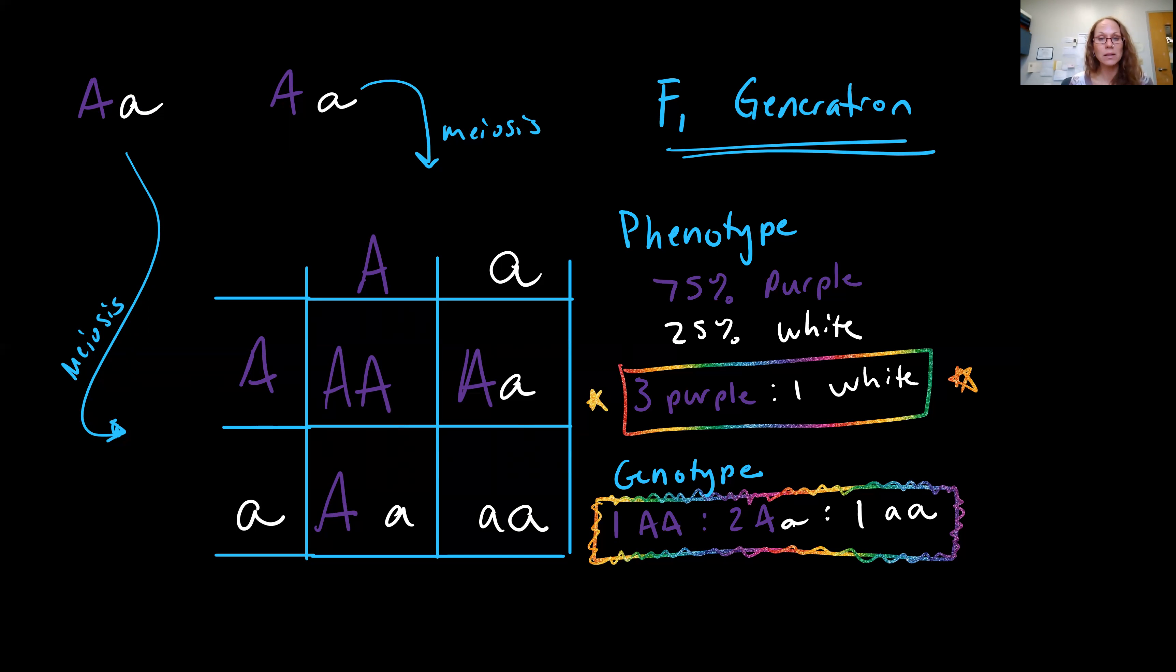So, classic Mendelian ratio, this was the thing that was special about his findings and his application of statistics, is when you're crossing two heterozygous individuals, you will get a phenotypic ratio of three dominant to one recessive and a genotypic ratio of one to two to one, one homozygous dominant, two heterozygous, and one homozygous recessive every time.